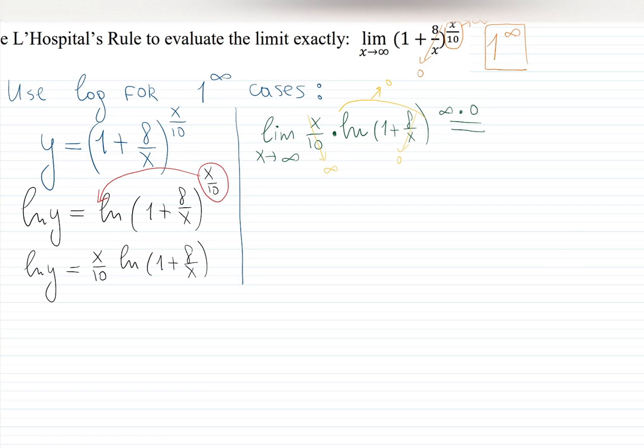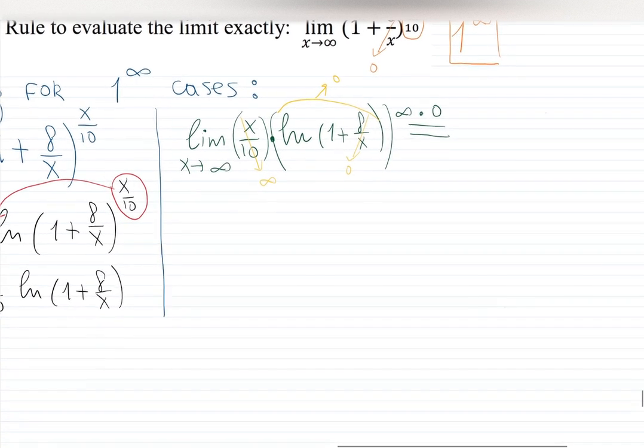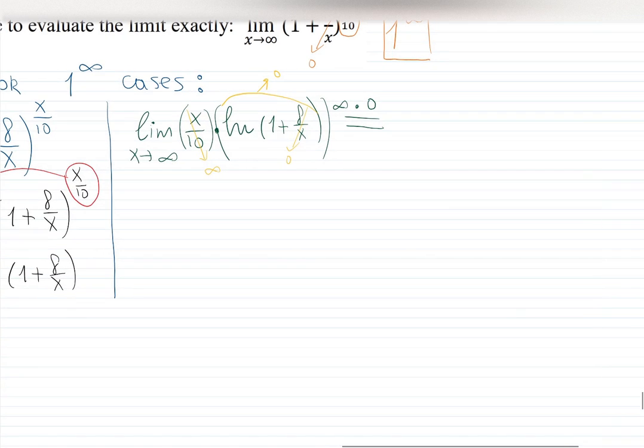What do we do when we have infinity times 0 case? We need to flip one of the functions. Put one of those two functions in the denominator. You choose, but I don't like when log goes to the denominator because then you will have several chains to work with. So let's keep log at the top.